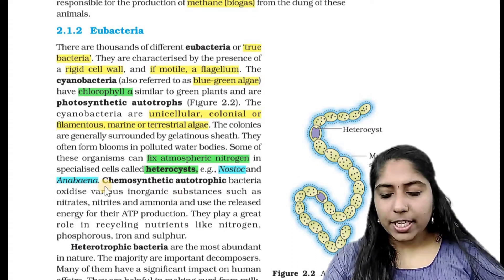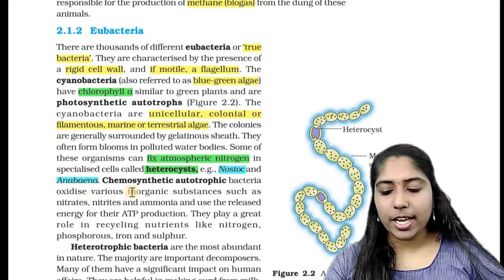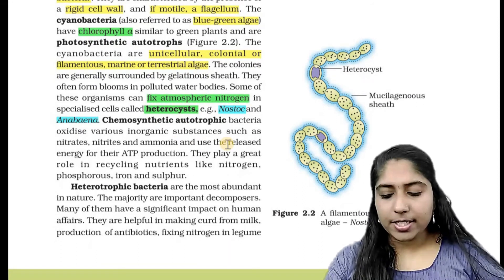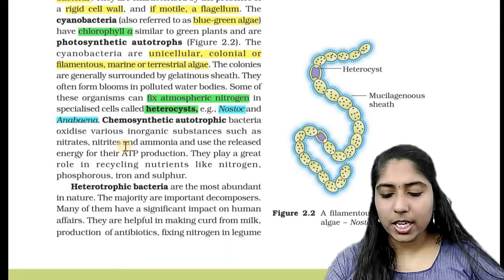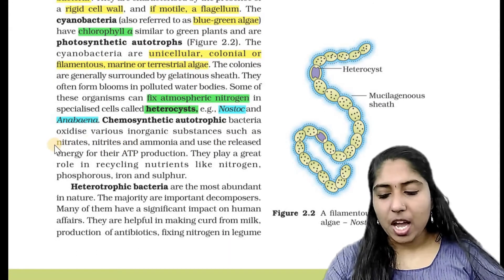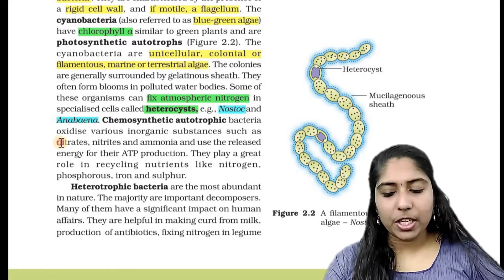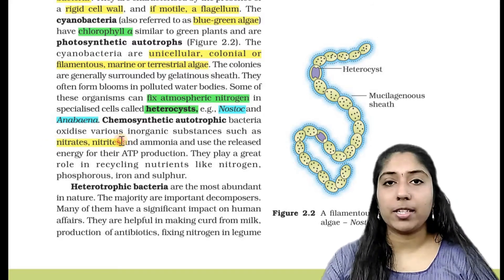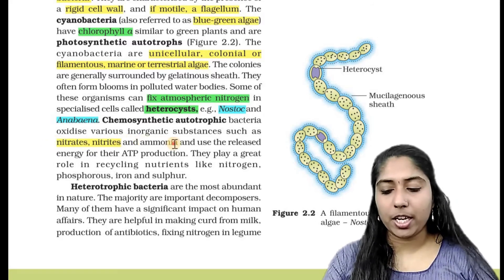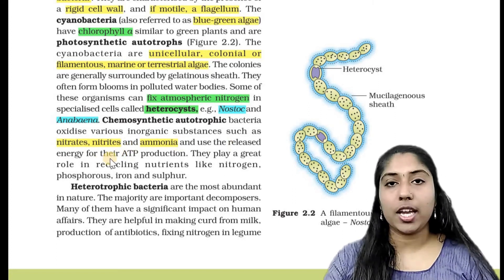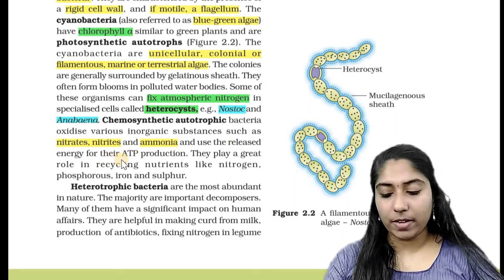Chemosynthetic bacteria can oxidize various inorganic substances such as nitrates, nitrites, and ammonia, and use the released energy for their ATP production.